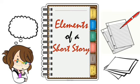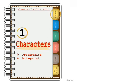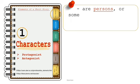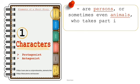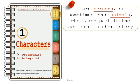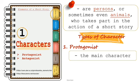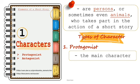The first element of a short story is characters. These are persons, or sometimes even animals, who take part in the action of a short story. There are two types of character. The protagonist is considered the main character. It is not safe to call the protagonist a hero because the main character is not always heroic — he or she is the person with which the story is most concerned.